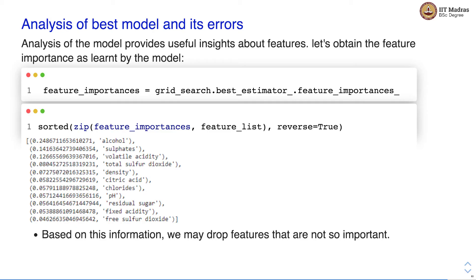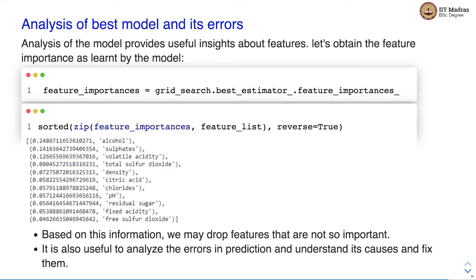Based on this information, we may drop a few features that are not so important in prediction of the target variable. Based on the reduced feature set, we again retrain the model and follow the process. We retrain the model, find the best combination of hyperparameters using either GridSearchCV or RandomizedSearchCV depending on the size of the parameter space. And once we obtain the best parameters, we can analyze the model and find insights about the important features.